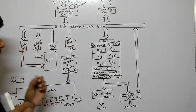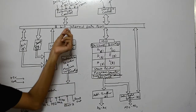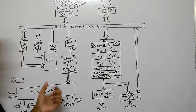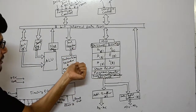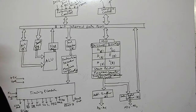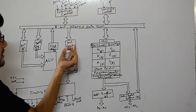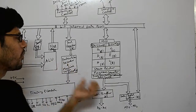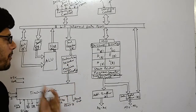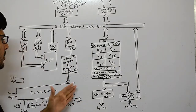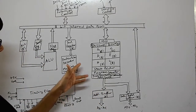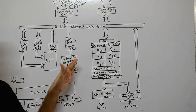Instructions placed in programs come to the instruction register, which is also an 8-bit register. After that, the instruction register feeds into the instruction decoder and machine cycle encoding block. The instruction decoder decodes the instructions, and the machine cycle encoding converts them to machine-level language — binary 0s and 1s.